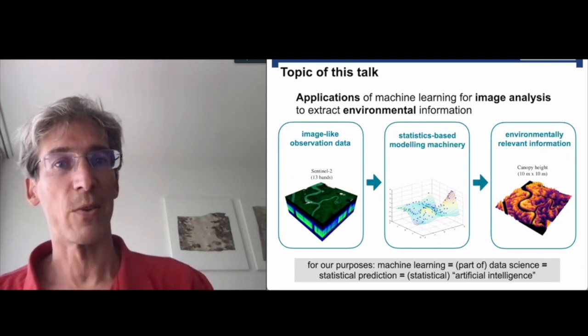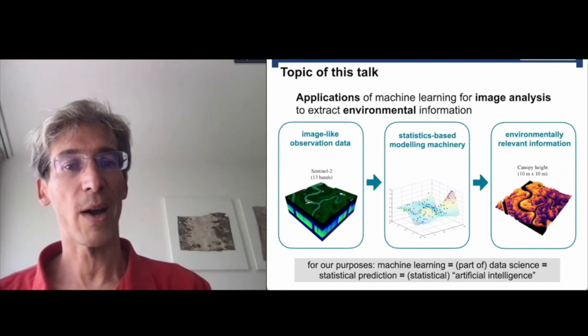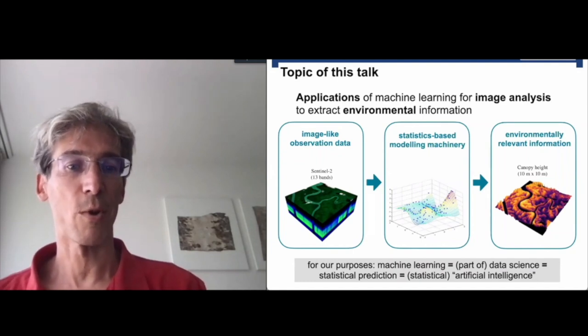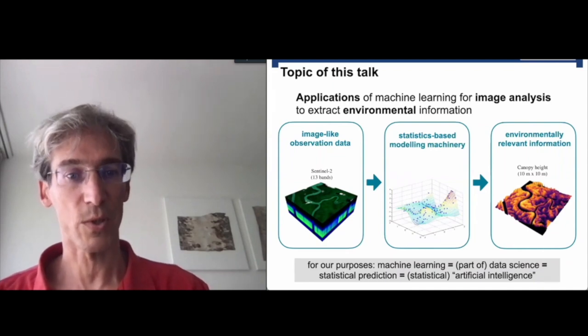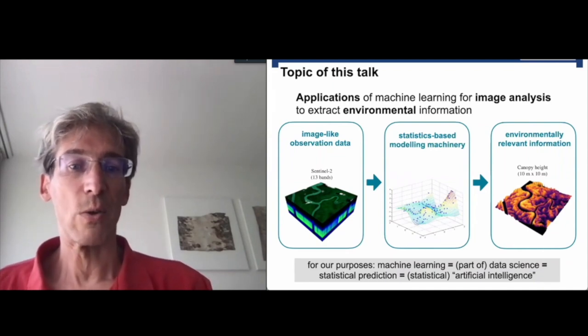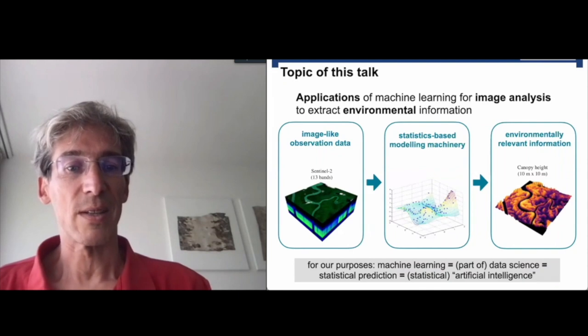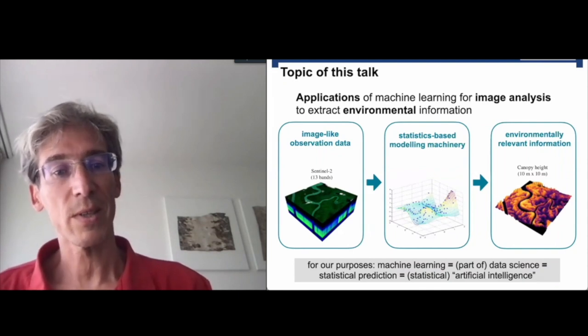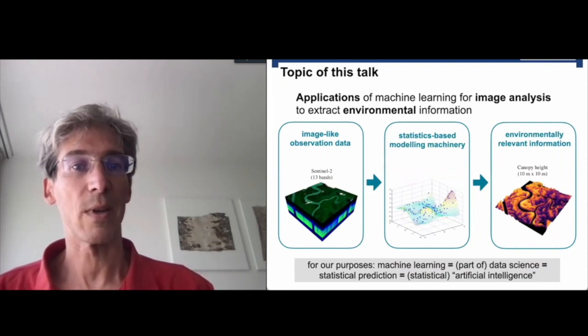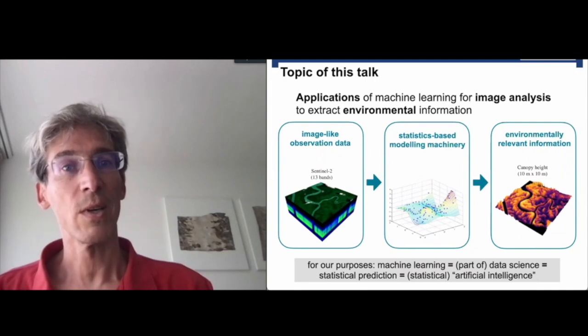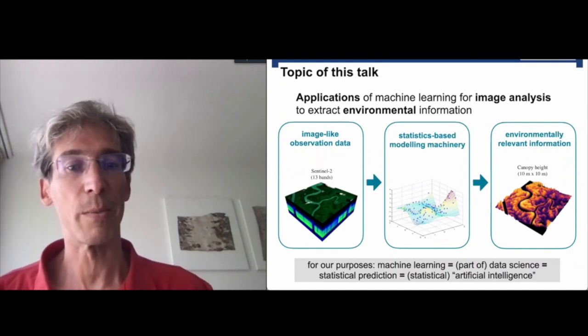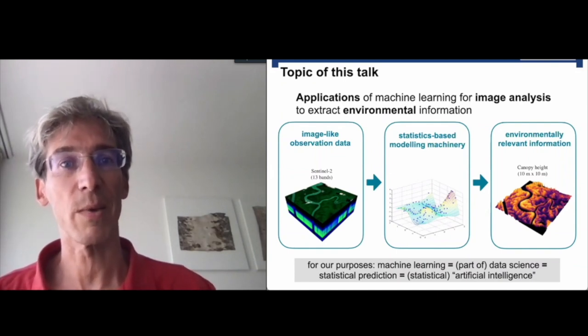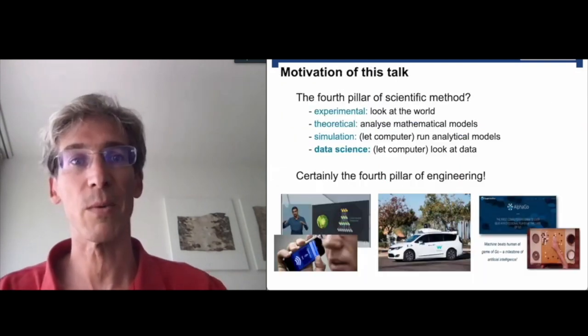For our purposes, there's a lot of wording, a lot of hype around this topic at the moment. I'm not going to make a difference here. Machine learning is the statistical analysis or data mining part of data science. It's also large-scale statistical prediction and what some people call statistical AI - not symbolic-minded, but data-driven. For me, this is for the moment all the same. I'm aware there are subtle differences, but they won't matter for today.